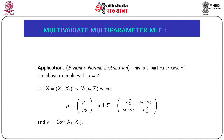Now we consider an application of the above MLE result. Suppose we consider a bivariate normal distribution, which is a particular case with p = 2. Let x = (x₁, x₂) follow N₂(μ, Σ), where μ = (μ₁, μ₂)ᵀ and Σ is a 2×2 matrix with diagonal elements σ₁² and σ₂², and off-diagonal elements ρσ₁σ₂, where ρ is the population correlation coefficient between x₁ and x₂.